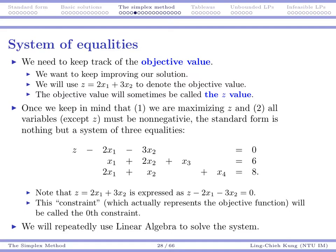So now we don't have the objective function. It is implicitly represented as a constraint. We're going to call this the zeros constraint. Starting from now, we will only need to worry about solving linear systems.